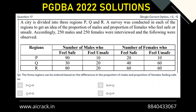Let's solve question number 17. A city is divided into three regions P, Q, R. A survey was conducted in each region to get an idea of the proportion of males and proportion of females who feel safe or unsafe. 250 males and 250 females were interviewed. The question asks us to order the three regions based on the differences in the proportion of males and proportion of females feeling safe.